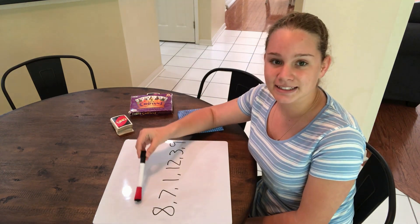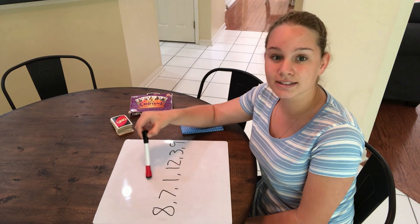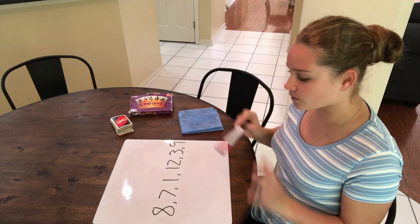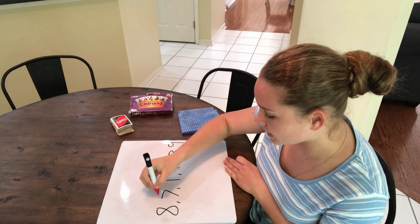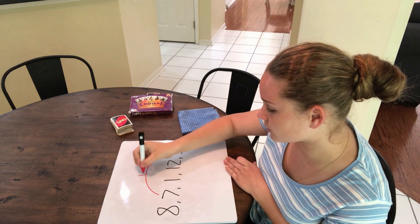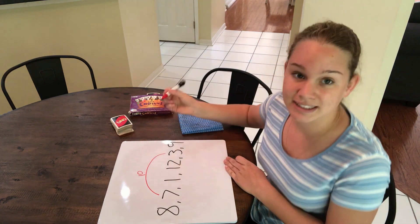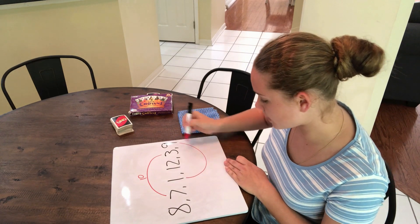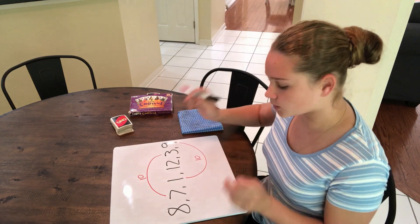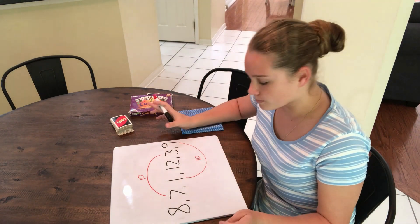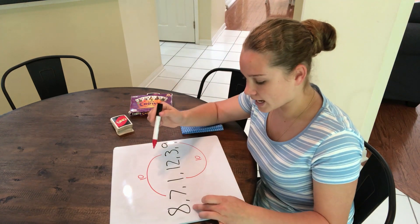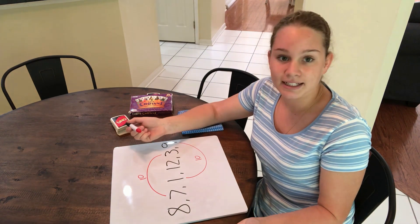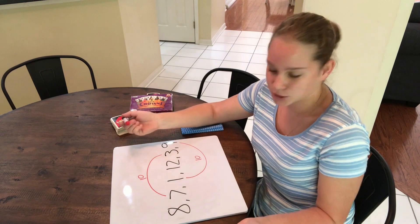So here I have 8, 7, 1, 12, 3, and 9. Straight away when I see this I know I have 7 and 3 which is 10. I also know 1 and 9 is 10. So I'm left with 8 and 12. But I know 8 and 2 is 10, and I've got another lot of 10, and 10 and 10 is 20.